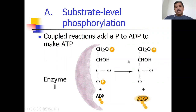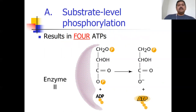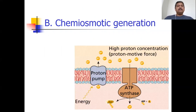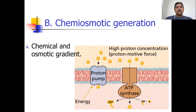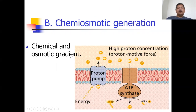Through substrate level phosphorylation, we're going to generate four ATPs from reactions in glycolysis, and some ATP is also generated in the Krebs cycle — two ATPs in each, four total for one glucose molecule. That doesn't sound like a lot, but chemiosmotic generation of ATP will account for the rest. Chemiosmotic refers to both a chemical gradient and an osmotic gradient.